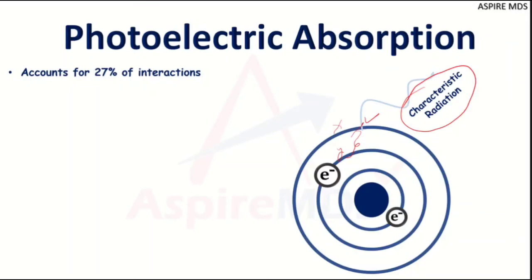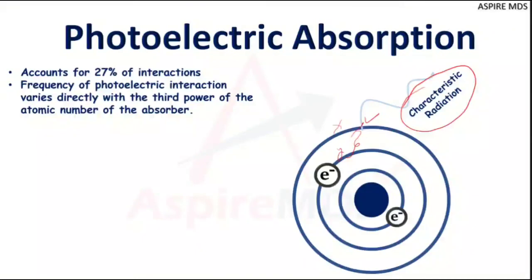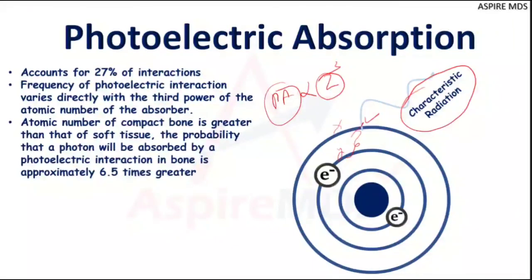Photoelectric absorption accounts for 27 percent of interactions and is very important from the image formation point of view. The frequency of photoelectric absorption is directly proportional to the cube of the atomic number — so the higher the atomic number of the object, the more the photoelectric absorption. Hard tissue therefore has more chances of photoelectric absorption compared to soft tissue — in fact, hard tissue has 6.5 times greater chances of photoelectric absorption compared to soft tissue.